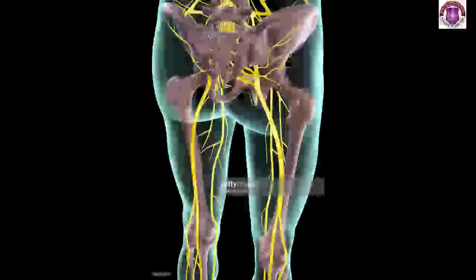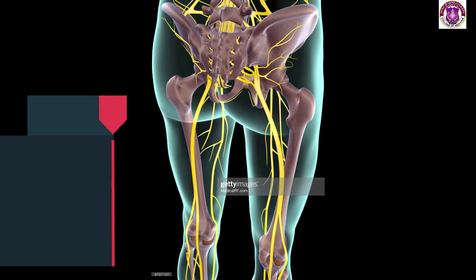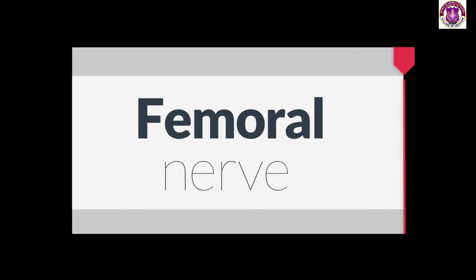Hi guys, good afternoon. I'm Dr. Enson Durla, your professor for today from the Jose Maria College of Medicine, Department of Anatomy. Today's lecture will cover the motor and cutaneous nerve supply of the lower limb. These nerves from the peripheral nervous system mostly come from the lumbar plexus and the sacral plexus. Let's begin.